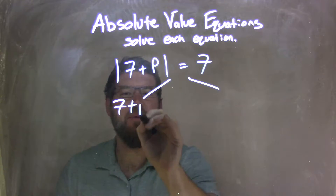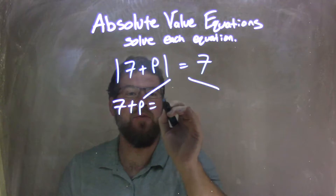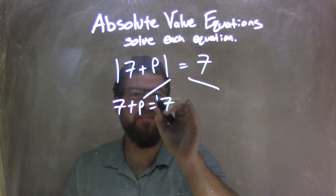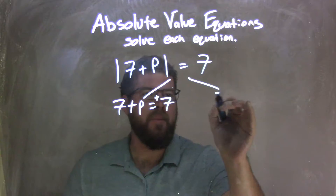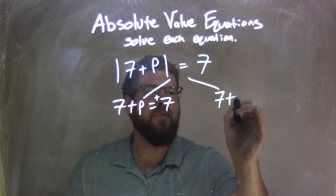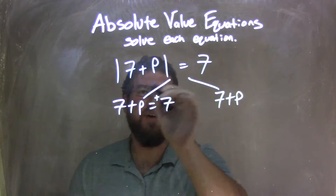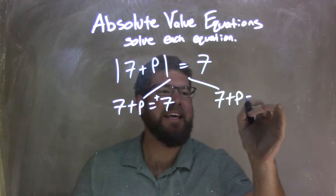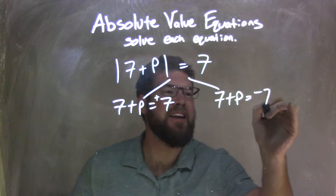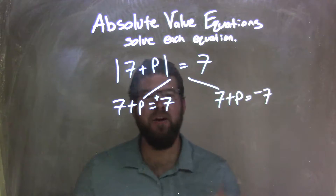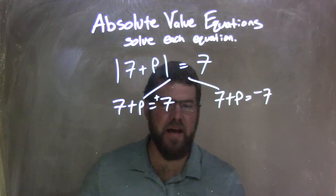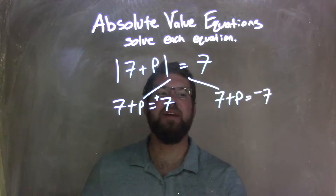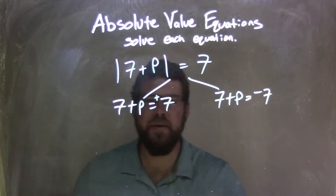7 plus P equals positive 7, and 7 plus P — what's inside the absolute value — equals negative 7. We take the number on the right, make a positive and negative version, and now we're going to solve each one individually.